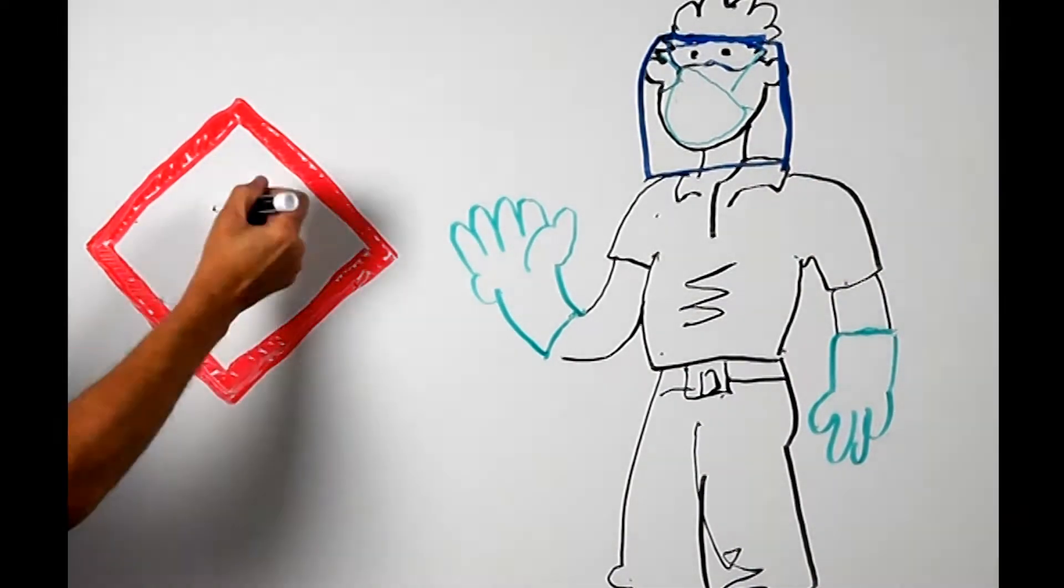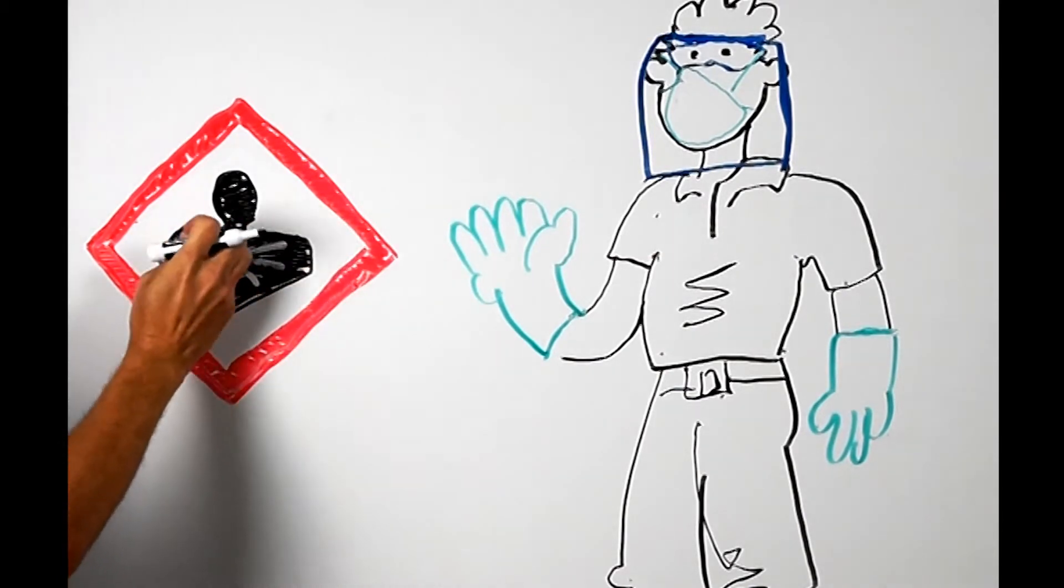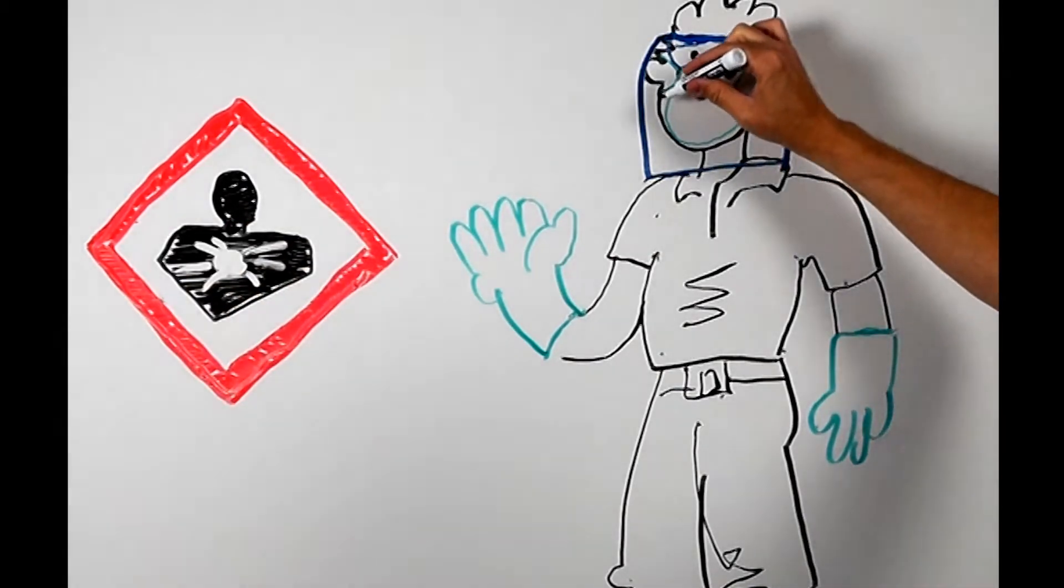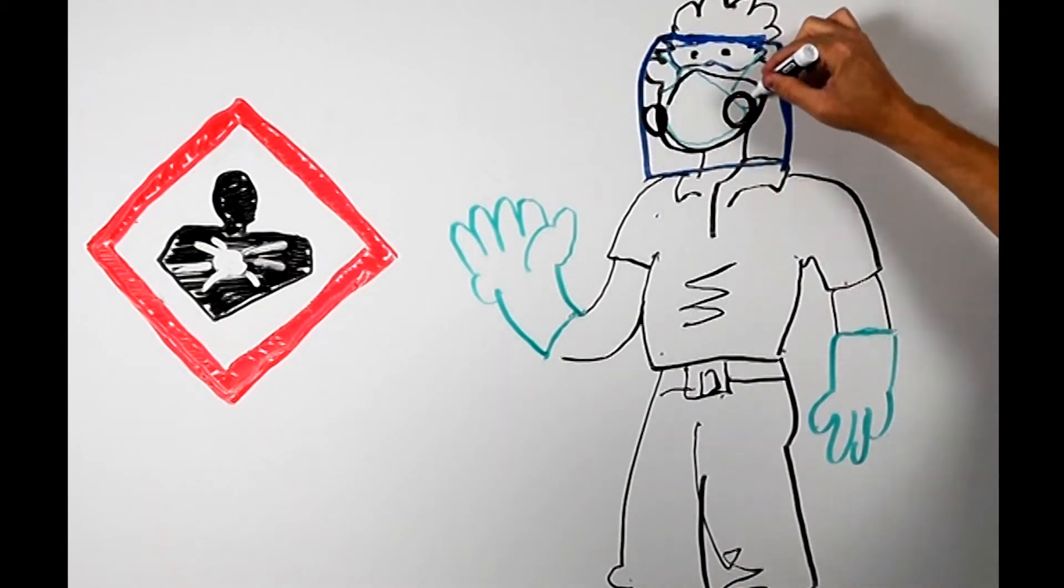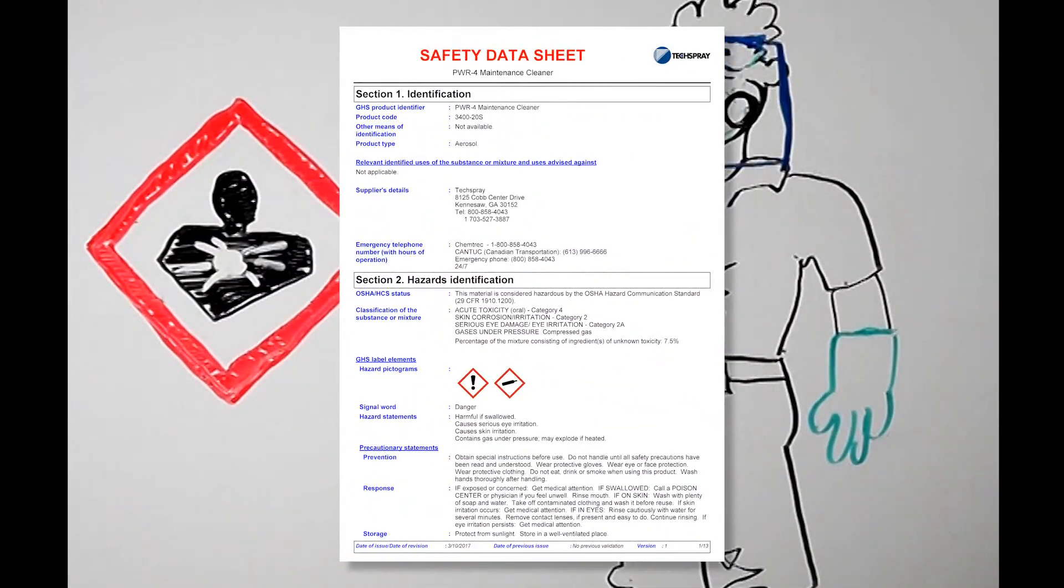The health hazard means it will build up in your body and cause problems like cancer, reproductive problems, organ failure, and other nasty effects. Definitely step up the PPE and limit exposure as much as possible. Pay close attention to the exposure limits on the SDS.